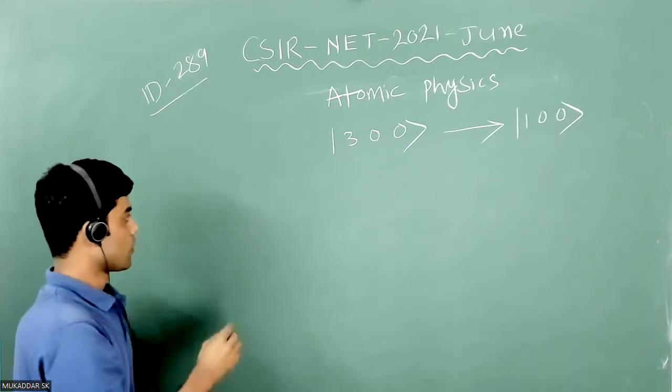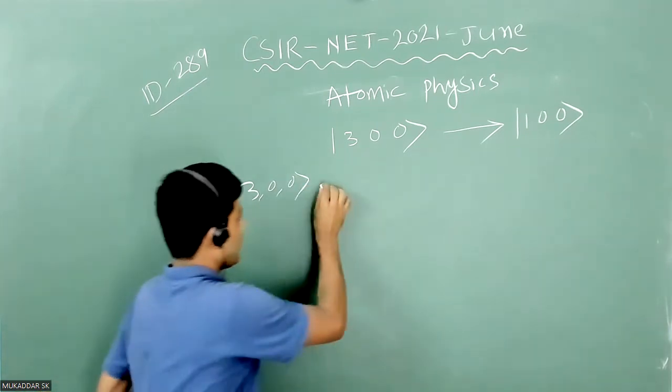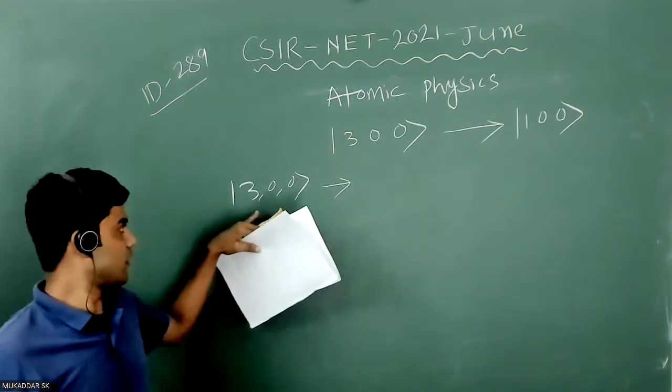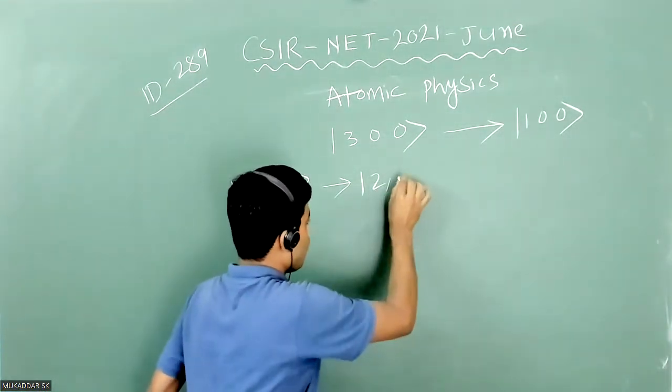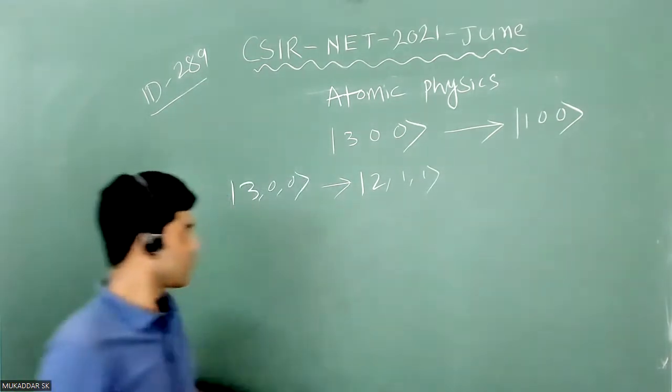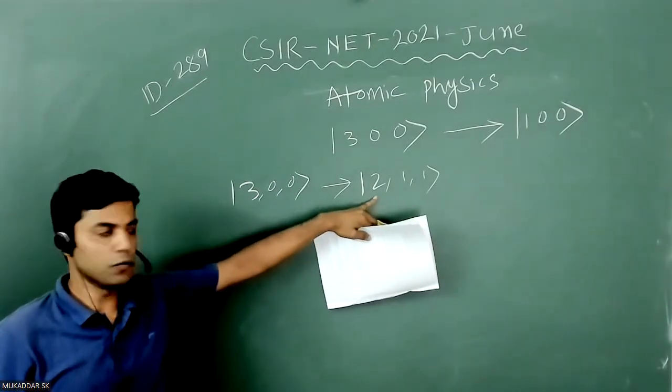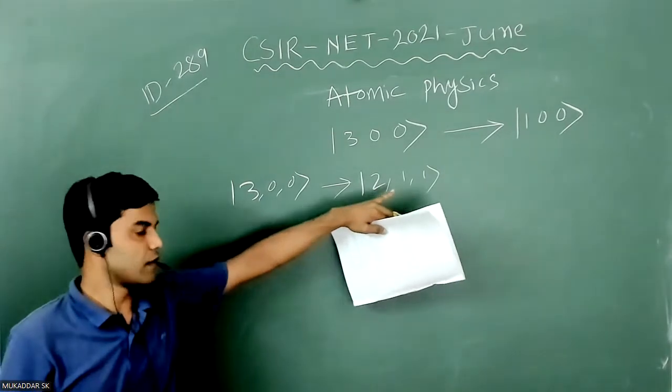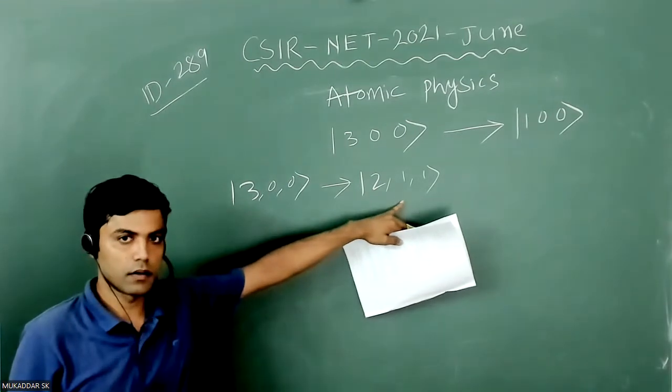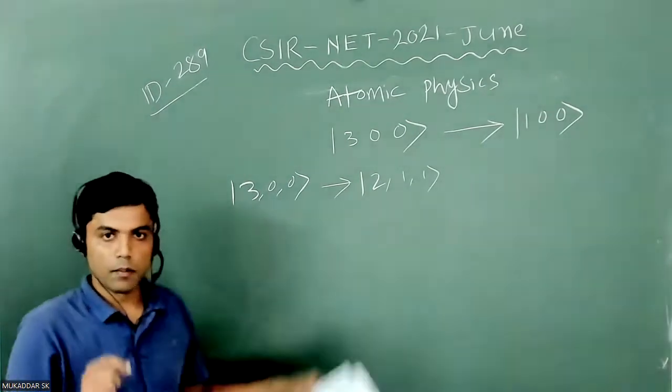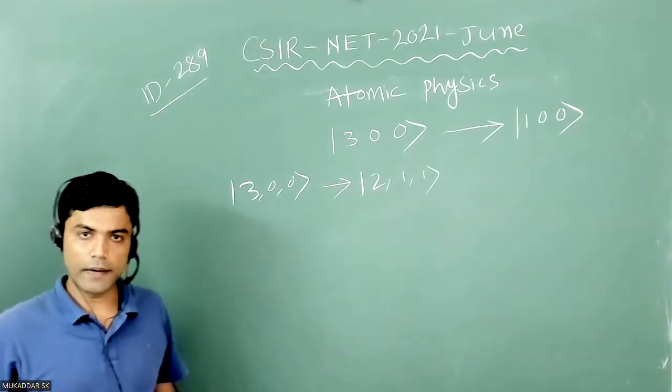So you know from 3,0,0 it can decay to, this is n, so it may be 2,1,1, right? Because this is the principal quantum number. So for this n will be 2. If n is 2 then definitely L will be n minus 1, then that will be 2 minus 1, it means 1. And M will be minus L to plus L. It means M can be 1, it can be 0, or it can be minus 1.